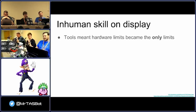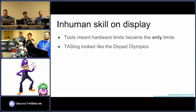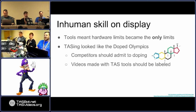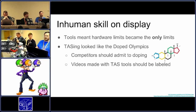The really key point is that when you're doing tool-assisted speedruns, tools mean that the hardware becomes the limit — it's not human limits. It looks like the doped Olympics: if you go in and say you're completely clean while competing, and you're lying and actually amped up on something, that doesn't work very well. That's basically how the speedrunning community looked at this. If you're going to dope in the doped Olympics, you should admit to doping. Videos made with TAS tools should be labeled as such.